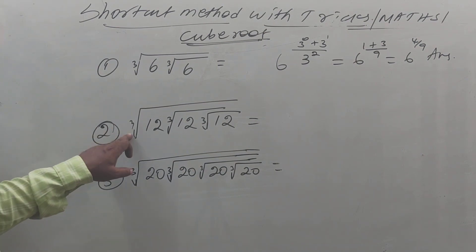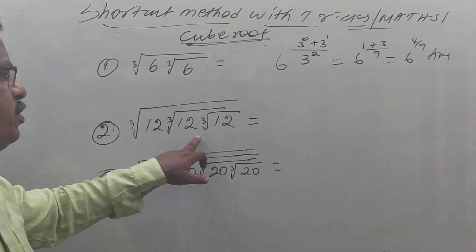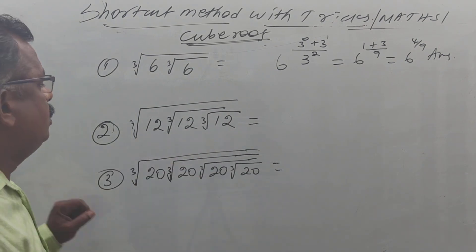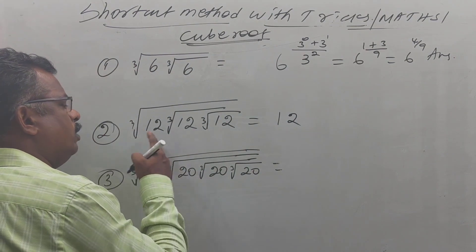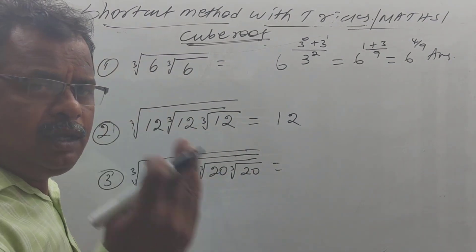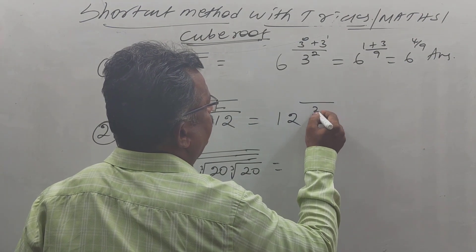Second question: cube root of 12. First you write 12. How many cube roots are available? Three cube roots are available. So you write 3 power 3.